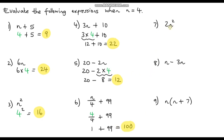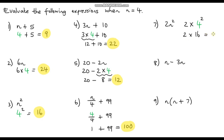Question 7 is 2n squared, and this is a type of question where a lot of people go wrong — it's all to do with BIDMAS. Our orders of operation say we always do indices before multiplication. So it's 2 multiplied by n squared, which becomes 2 multiplied by 4 squared. A lot of people wrongly do 2 times n first and then square the answer. We must square the value of n first: 4 squared is 16, then 2 times 16 is 32.